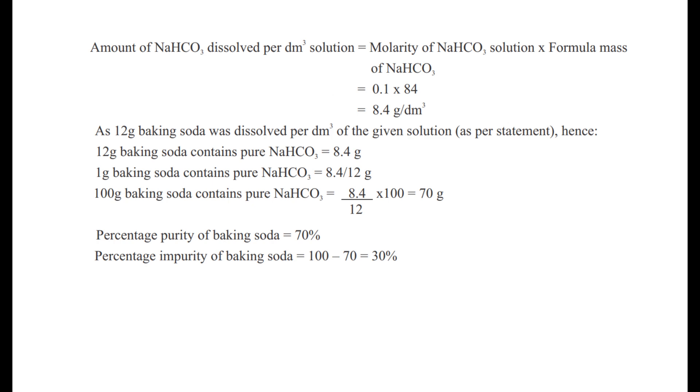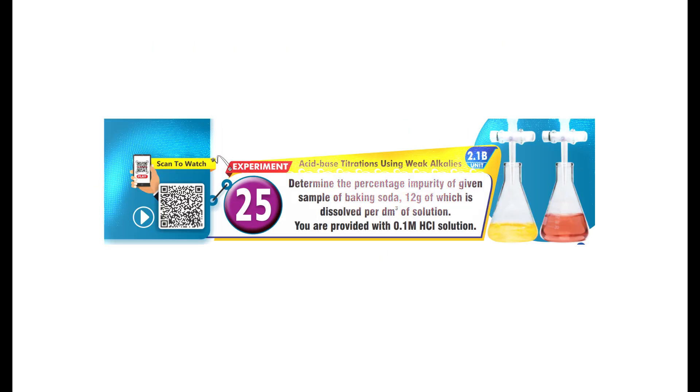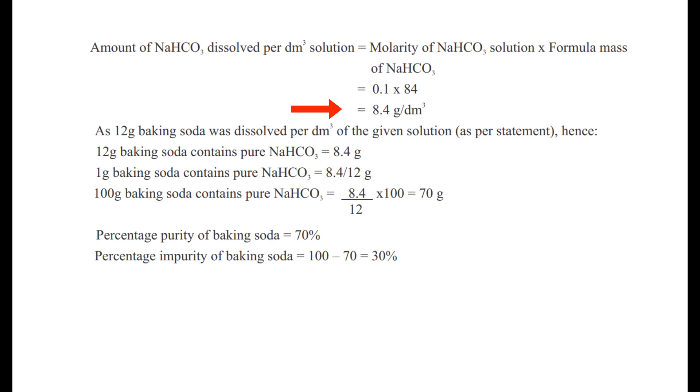The formula mass of sodium bicarbonate is 84. Amount of NaHCO3 dissolved per dm³ solution equals molarity times formula mass, which is 0.1 × 84 = 8.4 g/dm³. According to the statement, one cubic decimeter solution contains 12 grams of baking soda, but our experiment shows only 8.4 grams is pure sodium bicarbonate.